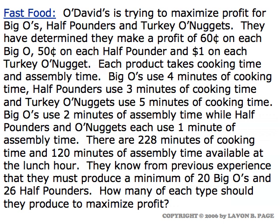This problem is of a fast-food franchise named O'David's, and they're trying to maximize the profit on three products: Big O's, Half Pounders, and Turkey O'Nuggets.